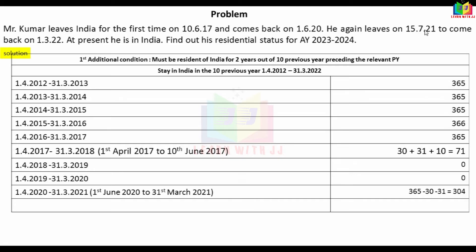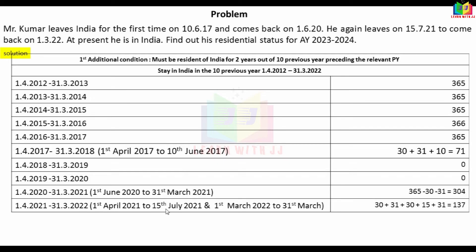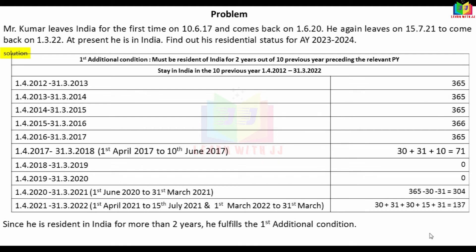For year 21-22: from 1st April, April = 30, May = 31, June = 30, July = 15 days. Then from 1st March to 31st March = 31 days. That is 137 days total. So this year qualifies. The 2-years-resident condition out of 10 previous years is satisfied.